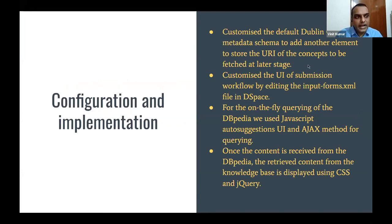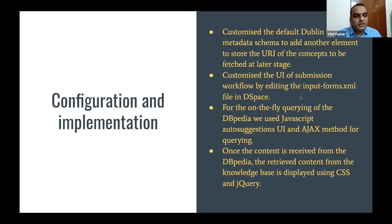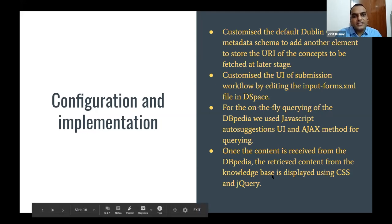We customized the default Dublin Core metadata schema to add another element to store the URI of the concept, since we need to store the URI at the time of submission when the submitter selects the topic. We created one metadata field inside the Dublin Core schema of the DSpace software. We made customizations in the submission workflow by editing the input-forms.xml file in DSpace. For the on-the-fly querying of DBpedia, we use JavaScript autocomplete UI and Ajax method for querying. Once the content is received from DBpedia, we display it using CSS and jQuery.